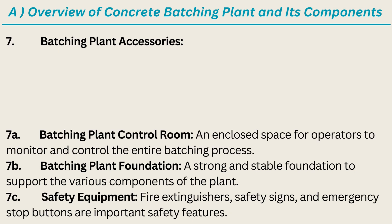7. Batching Plant Accessories. 7A. Batching Plant Control Room — an enclosed space for operators to monitor and control the entire batching process. 7B. Batching Plant Foundation — a strong and stable foundation to support the various components of the plant. 7C. Safety Equipment — fire extinguishers, safety signs, and emergency stop buttons are important safety features.